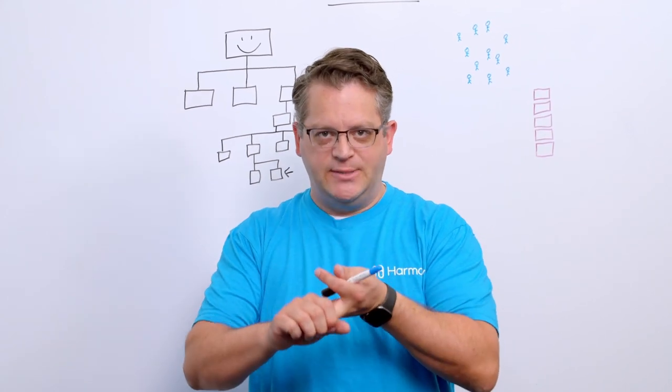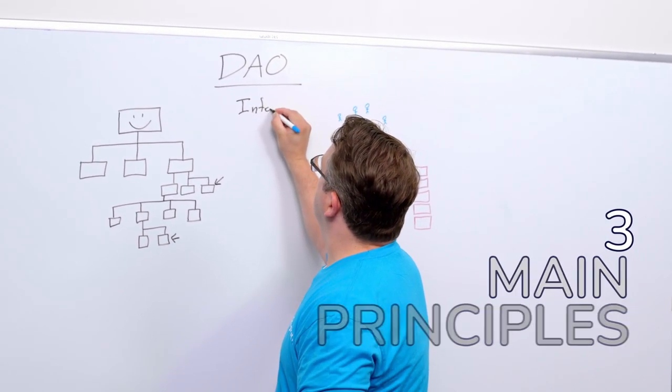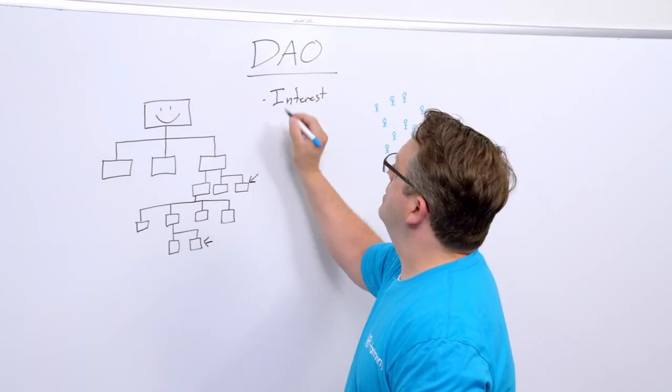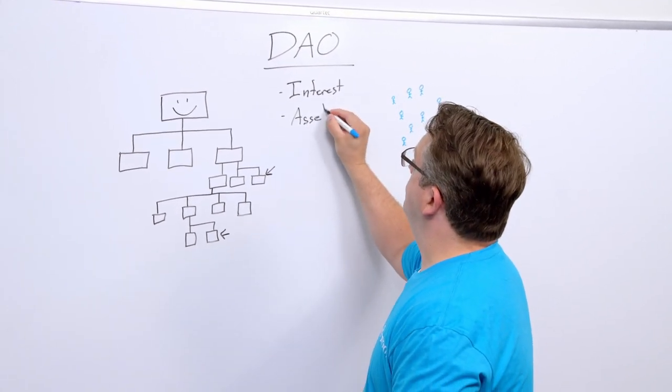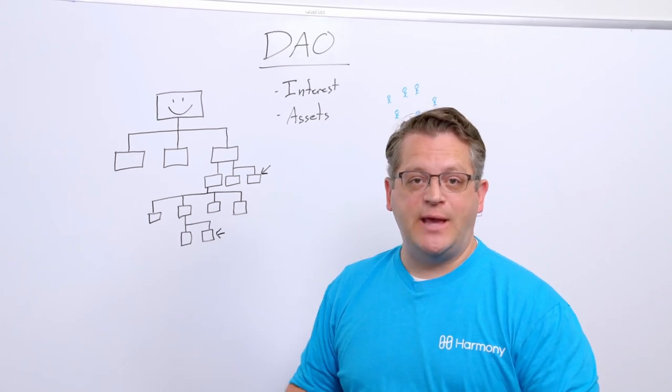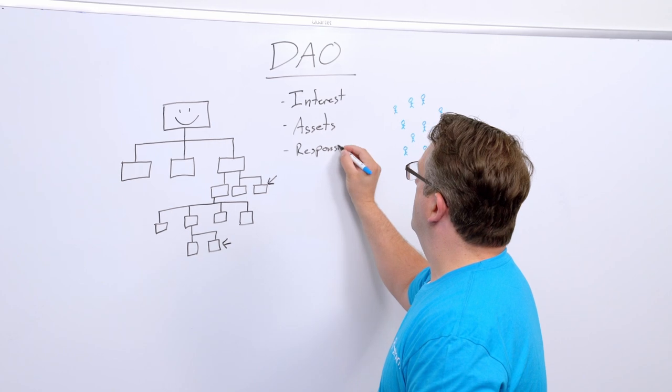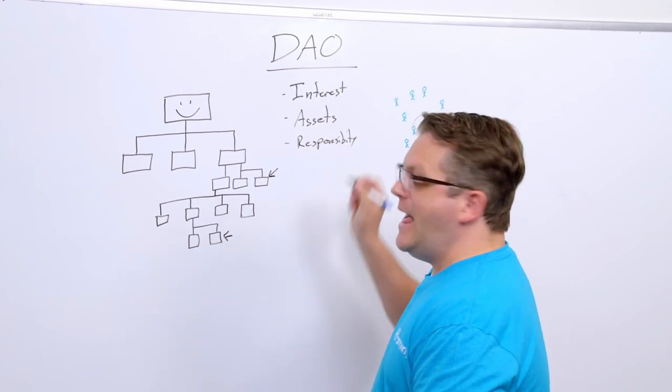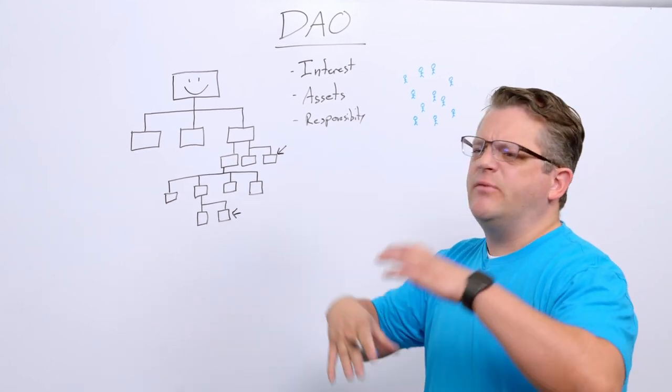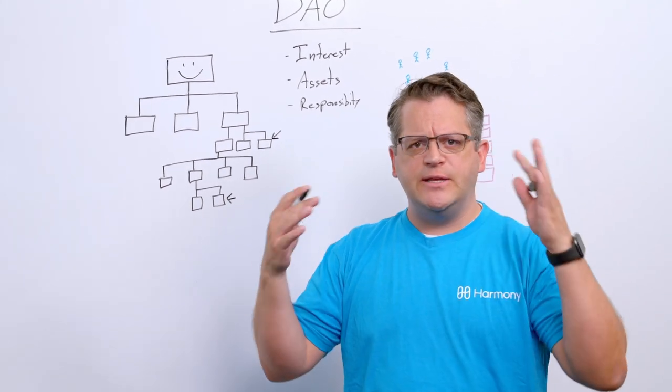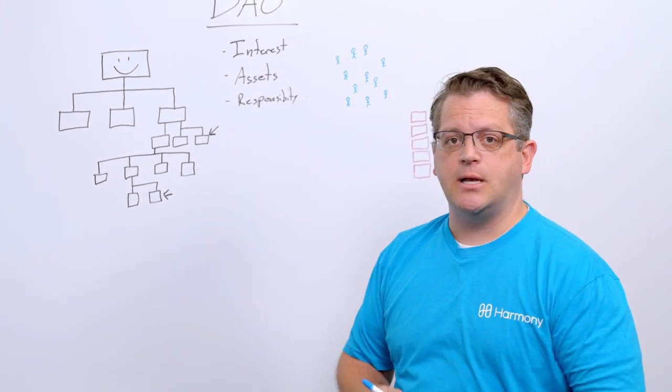There are three main principles inside a DAO. We need to make sure we have a shared interest. We need to make sure that we have some shared assets. And we need to make sure we have shared responsibility. And if we can have those three things, then those are the building blocks of a DAO. There are many different flavors of DAOs, but almost all of them have these three things in common.